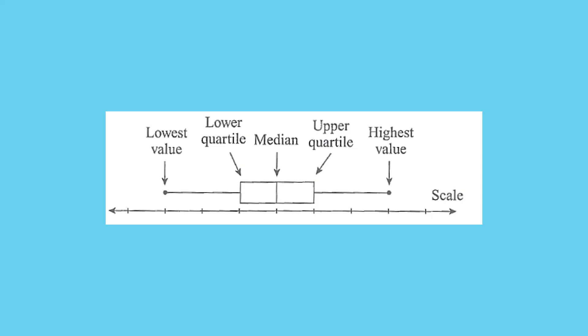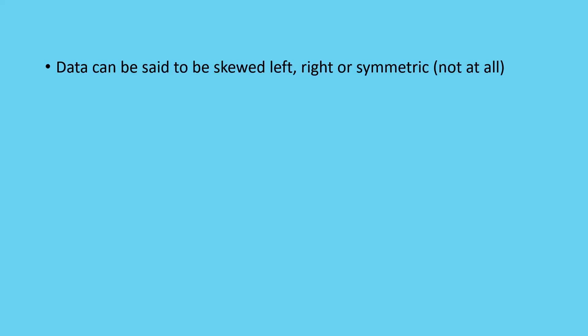So, when I was talking about skewness, I said data can be said to be skewed left, right, or symmetrical, which is not at all, so that there is nothing.